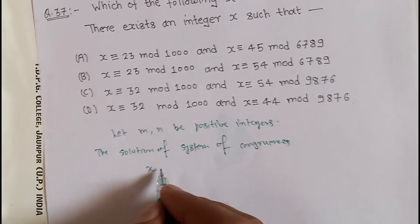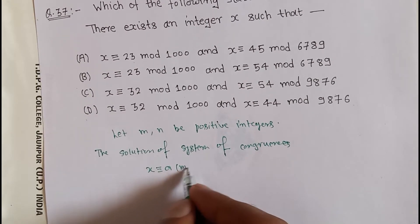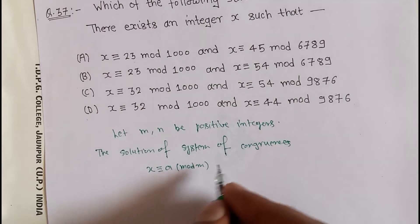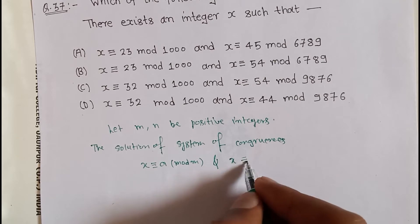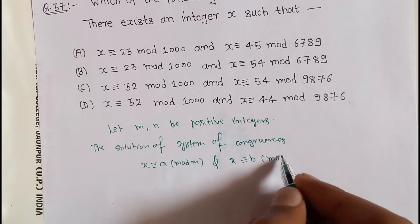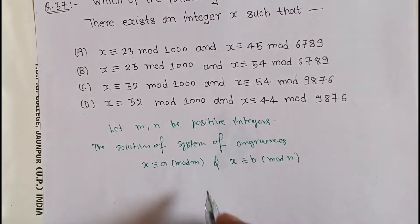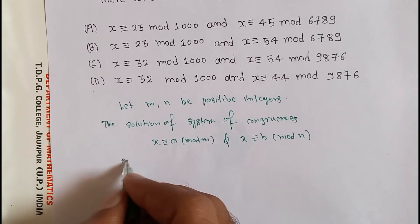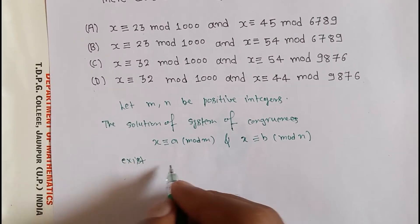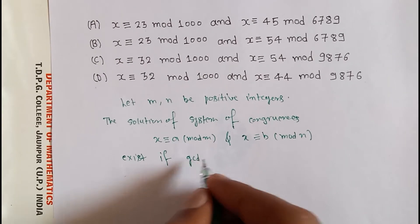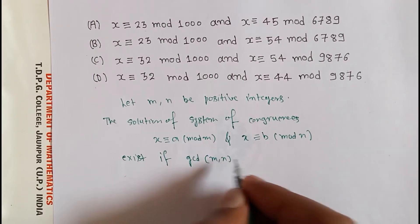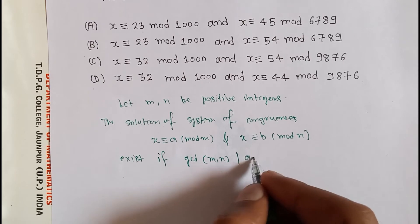x congruent to a mod m and x congruent to b mod n exists if the greatest common divisor of m and n divides a minus b.